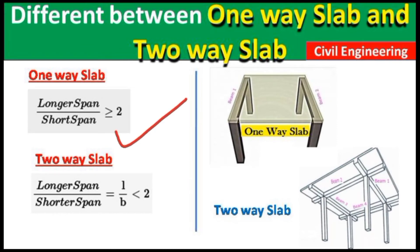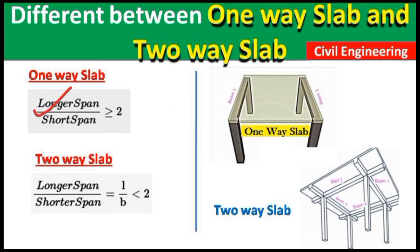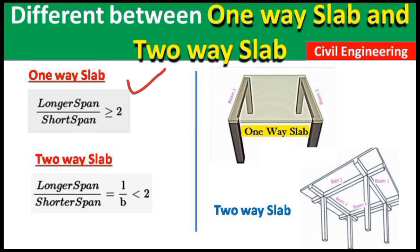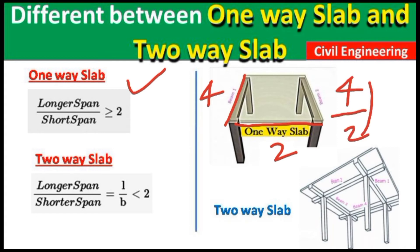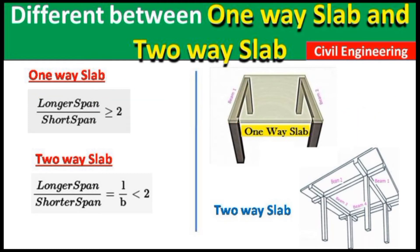Another very important difference: a simple way to identify a one-way slab is to divide the longer span by the shorter span. If the result is greater than or equal to 2, it is a one-way slab. For example, if longer span is 4 m and shorter span is 2 m, then 4 divided by 2 equals 2 — which is equal to 2, so it is a one-way slab.